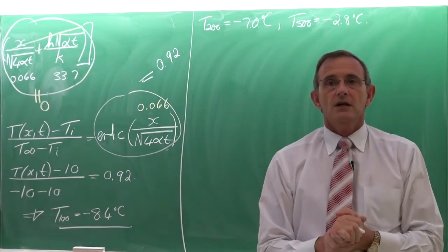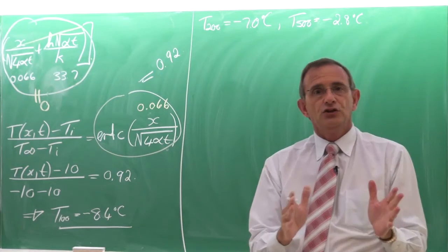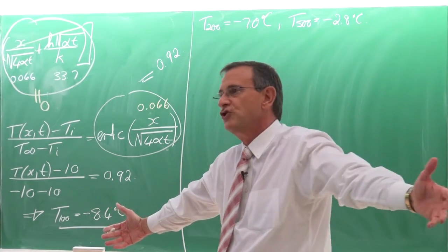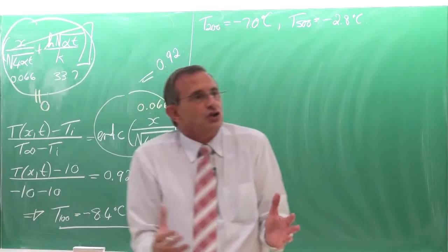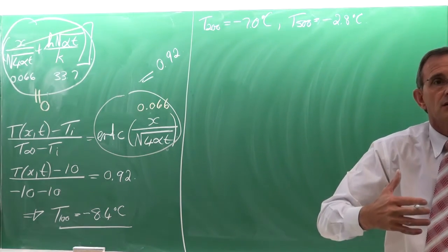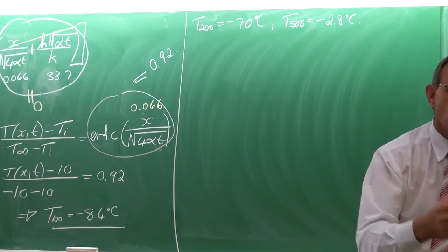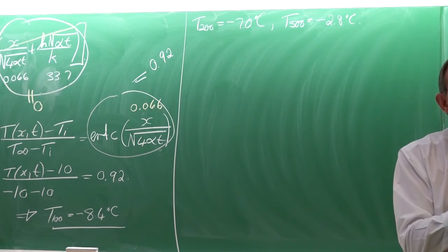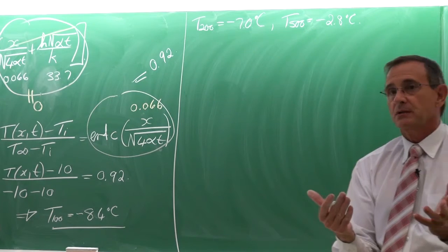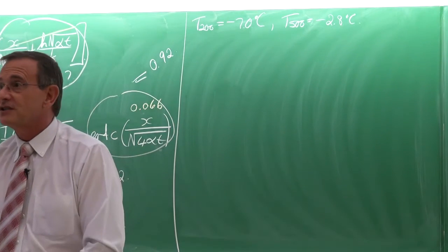Do you understand the application of a semi-infinite solid now? Both these examples were for the Earth — something very big, where we all agree that surface events won't influence the core temperature. But now consider other bodies, for example a beef carcass that is 240 millimeters thick. Can you use a semi-infinite approach for that? The answer is yes — if you do it for a short period of time, maybe a few seconds or a minute or two, and very close to the surface. However, you must verify that the inner temperature of the carcass, originally at 37 degrees, stays constant. The moment that drops, the semi-infinite solution is no longer valid.